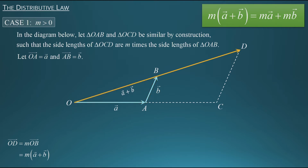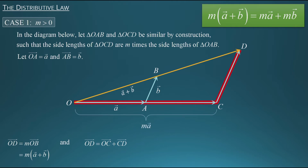Now let's look at expressing vector OD a different way. I can express it in terms of vector OC and CD. If I add vector OC to CD I get vector OD — we have a tip to tail configuration so we can use the triangle law of vector addition. Vector OD is vector OC plus CD. We could actually write vector OC as m times vector A, because it's in the same direction as vector A and the side lengths of triangle OCD are m times the side lengths of triangle OAB.